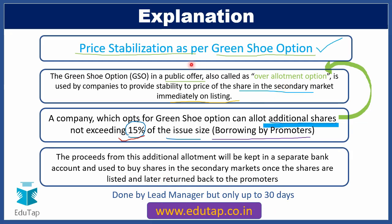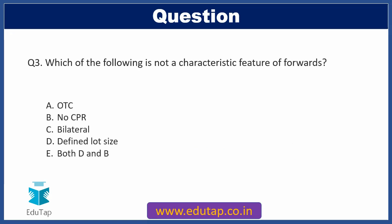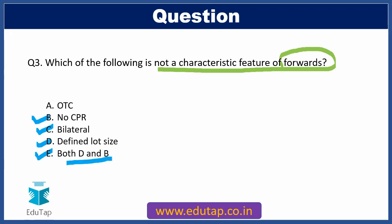So that was the comprehensive explanation of the green shoe option. Moving back to question two: the over-allotment option is also called the green shoe option (GSO), so Option E is the correct answer. Moving on to the third question: which of the following is NOT a characteristic feature of forwards? Option A: OTC, Option B: No CPR, Option C: Bilateral, Option D: Defined lot size, Option E: Both D and B (defined lot size and no CPR).